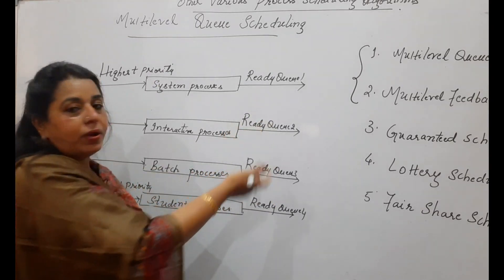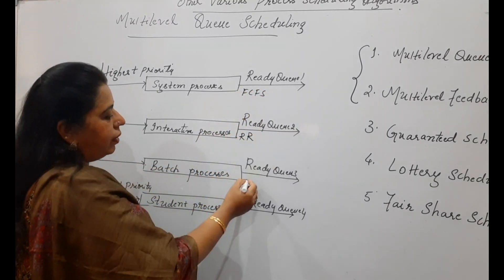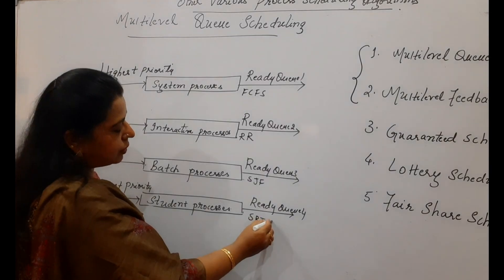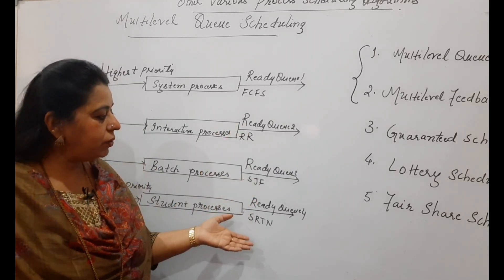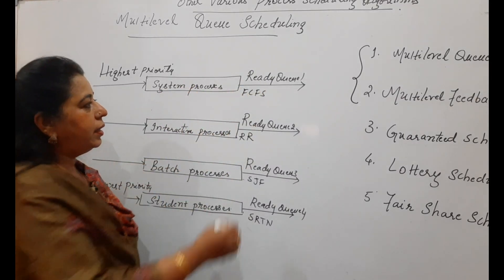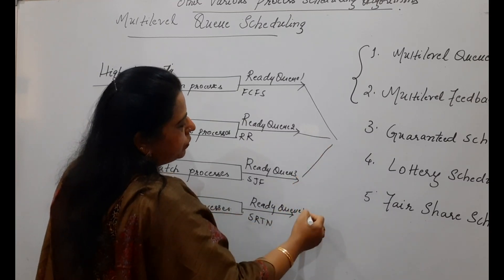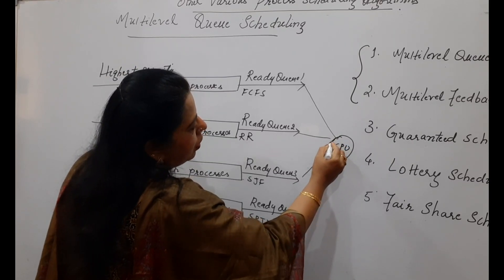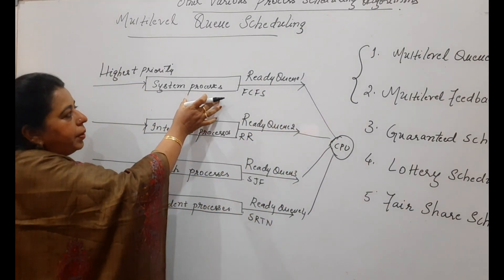One more important thing: in the four different ready queues, different scheduling algorithms can be used. For example, the first queue may use FCFS or Round Robin, another may use Shortest Job First or Shortest Remaining Time Next. It is not necessary that all four ready queues use the same scheduling algorithm. Each queue can use a different one, and the processes are then assigned to the CPU by the scheduler.